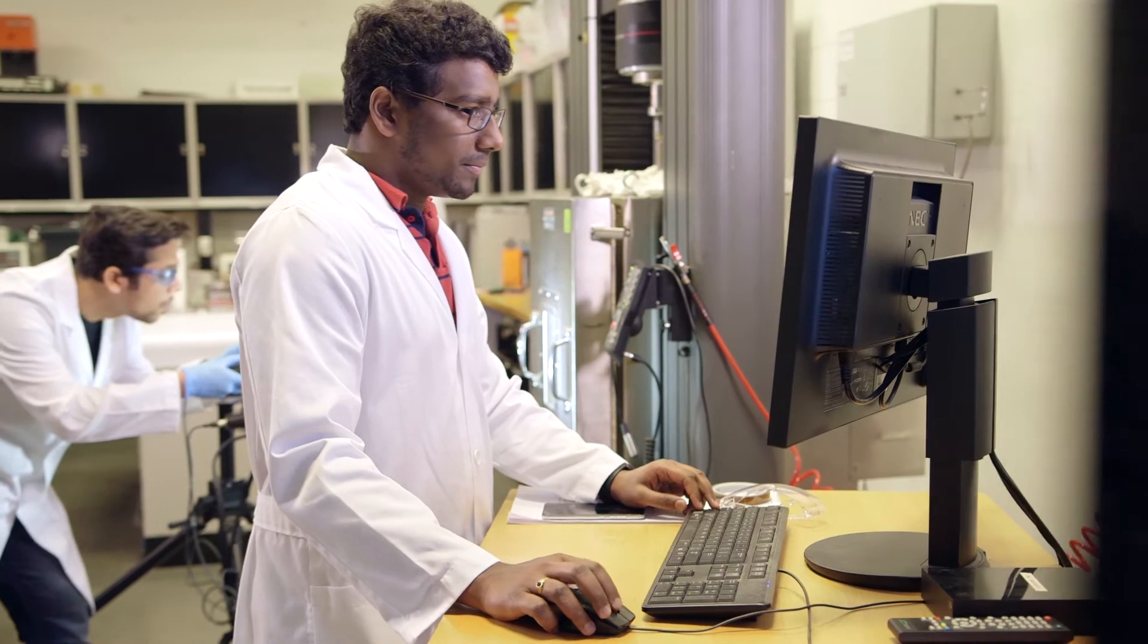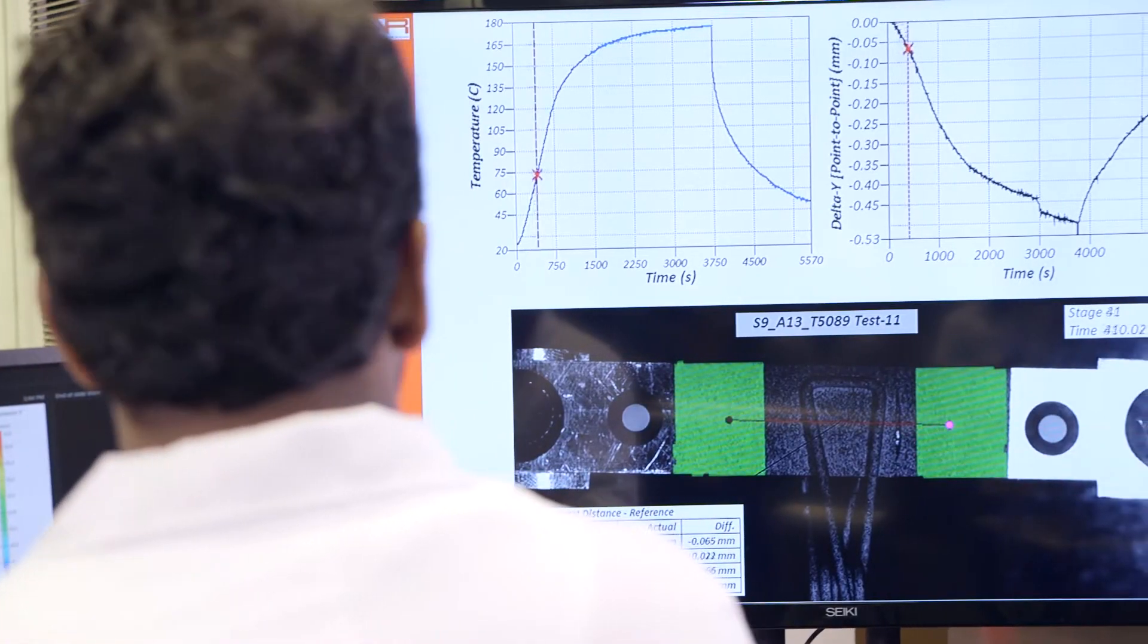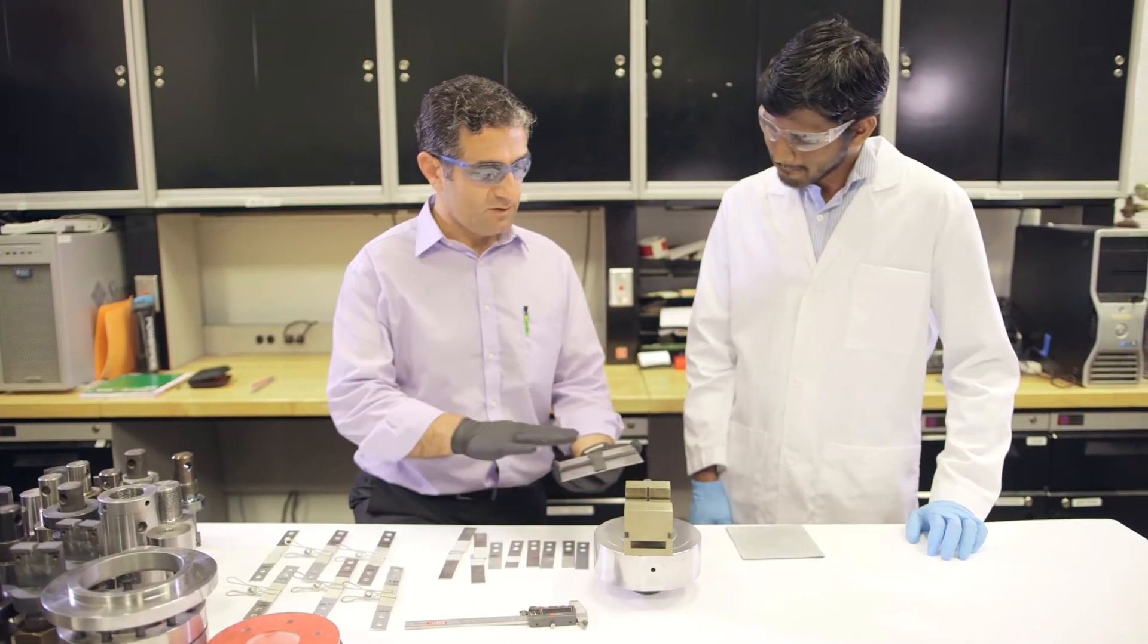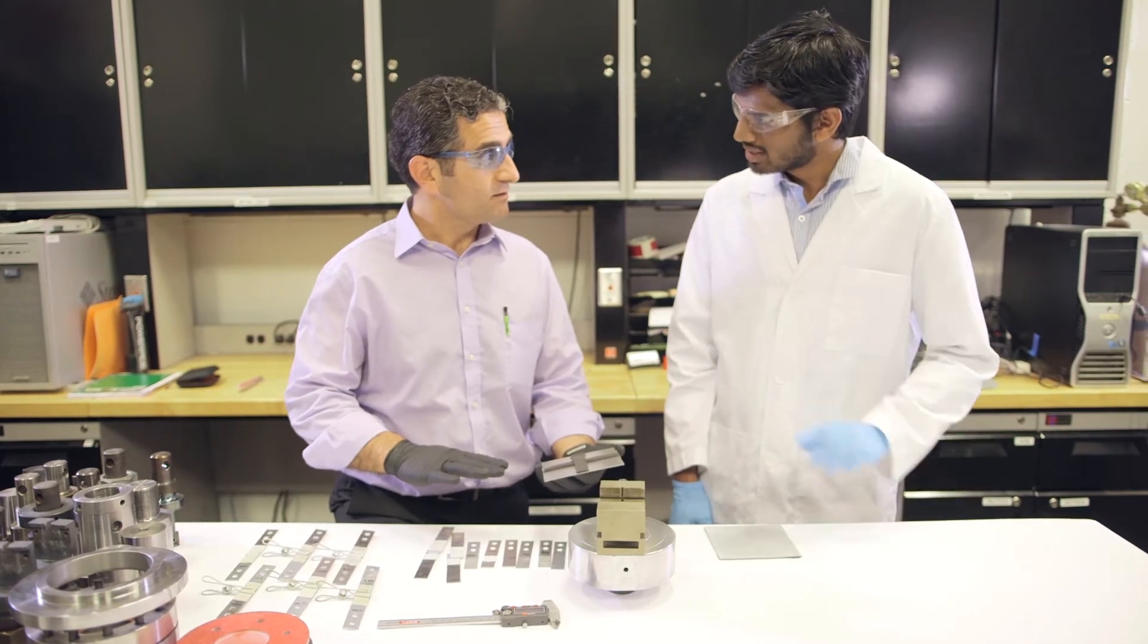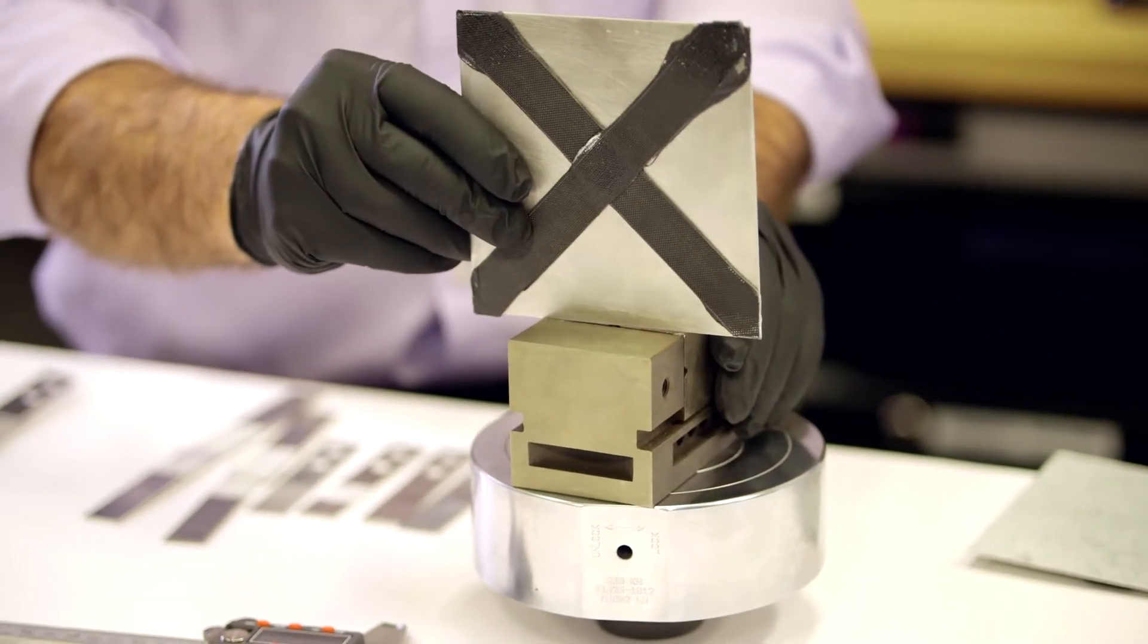They've been able to take a step back and say, how can we model this? How can we look at this from an experimental methodology? What the predictive model does is eliminates a lot of physical testing that is still common in the design process, but it also allows a lot less guesswork in the design development of the material selection and the type of adhesive.